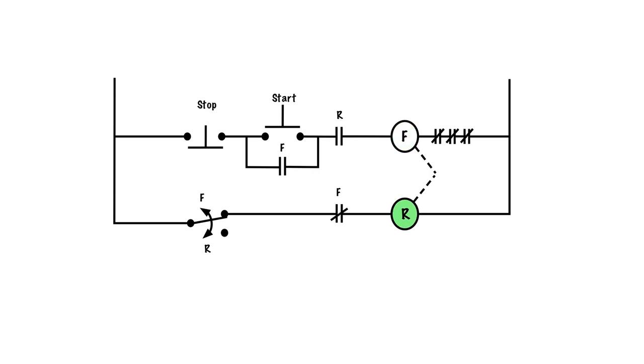Now we're going to experience the magic of the zero speed switch. We're going to hit stop. Stop de-energizes F. That will shut down this part of the circuit.